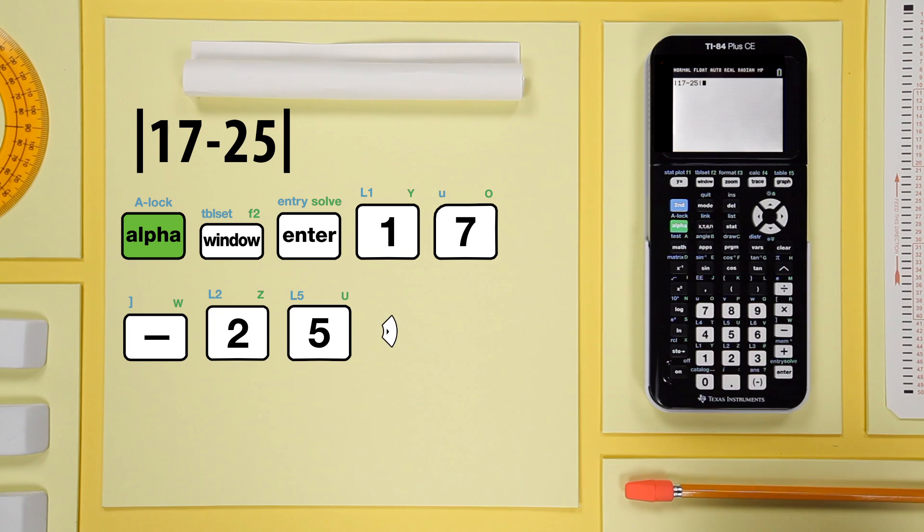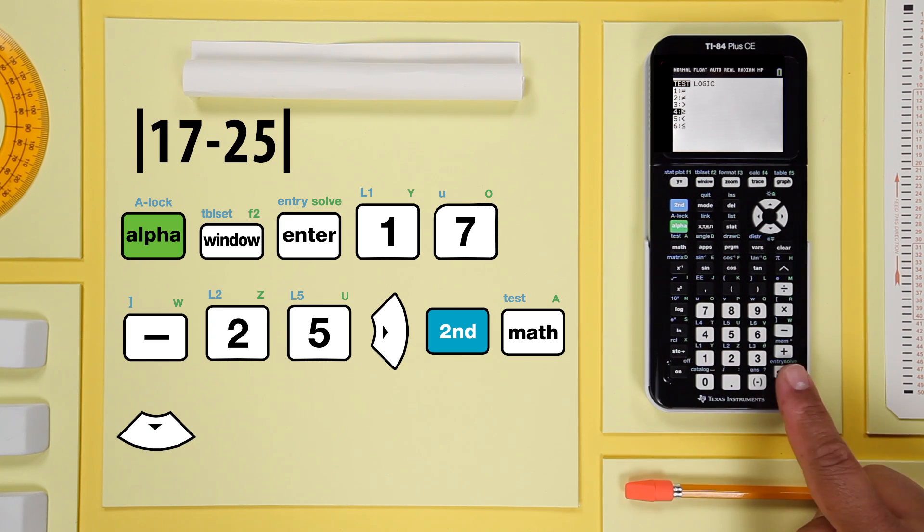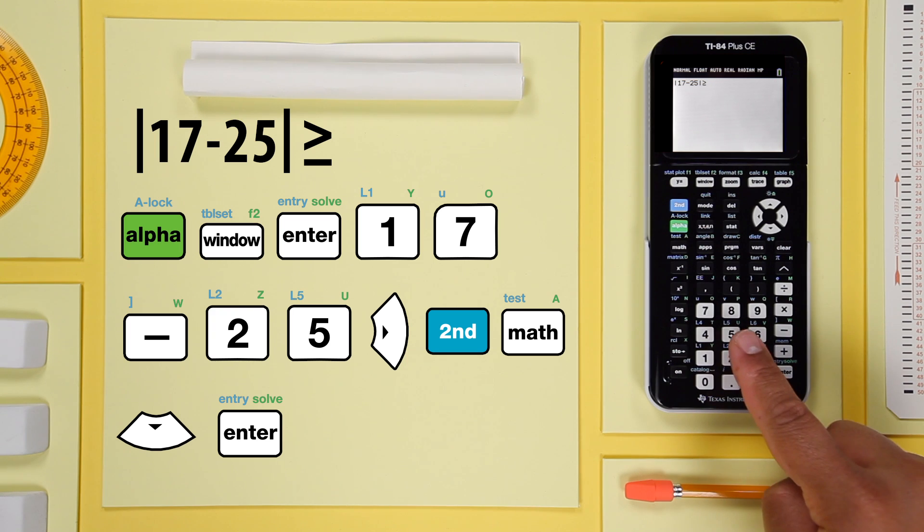Now right arrow. Then select the greater than or equal to, five, and finish the statement.